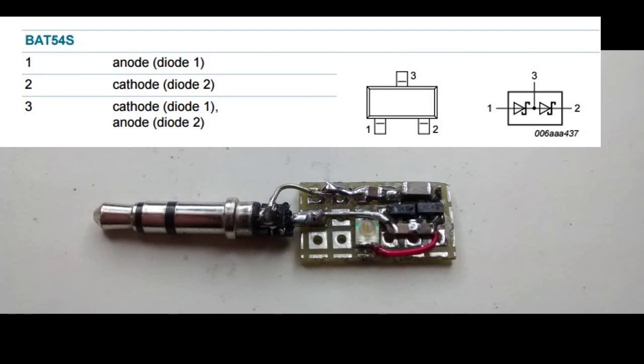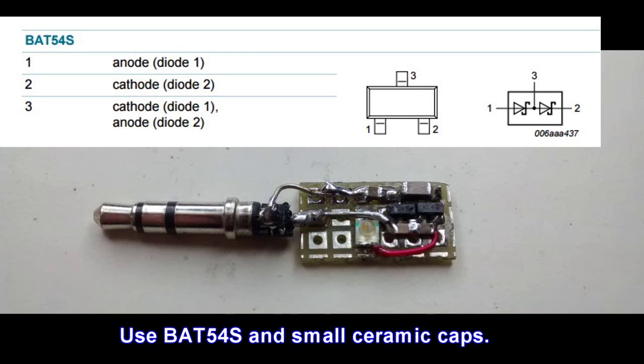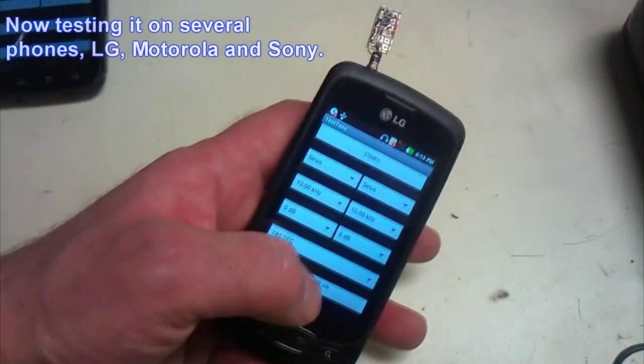To mount this on a PCB, I used the BAT54S, which has already two diodes in one package in the correct configuration. By the way, these are Schottky diodes with a very low forward voltage drop. Now let's test this on some cell phones.